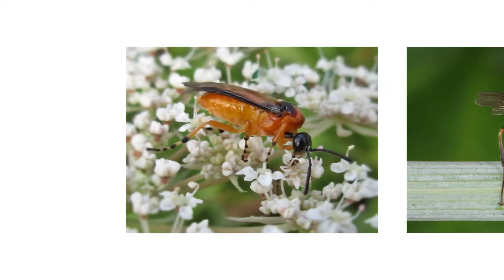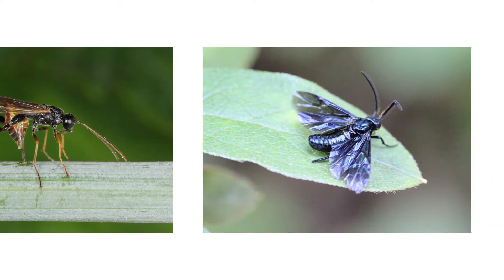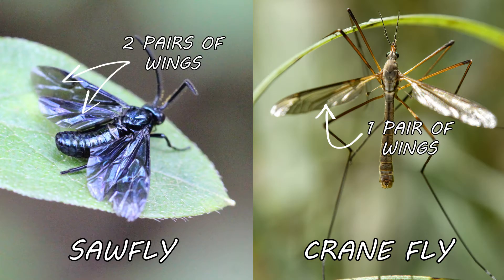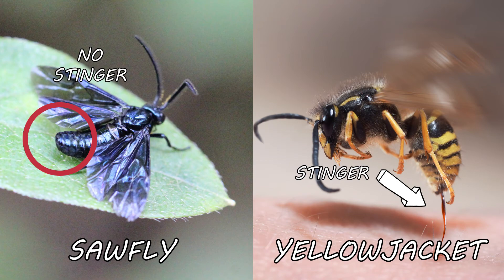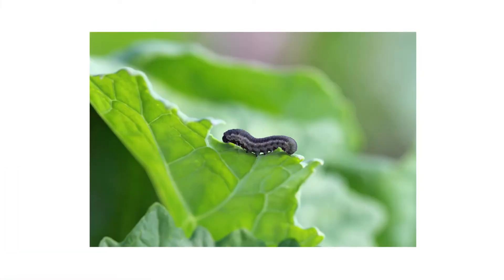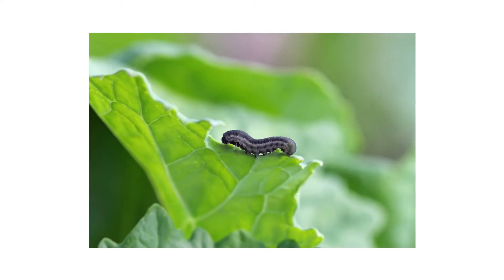There are thousands of different species of sawfly around the world and they each have a unique appearance, from when they hatch as larvae to when they pupate into adults. Though each species looks different, most generally resemble flies and wasps. Adult sawflies will have two pairs of wings, whereas flies only have one pair. Adult sawflies have thick waists, whereas wasps have thin waists. Also, sawflies lack stingers, unlike female wasps, despite being closely related to wasps and bees.